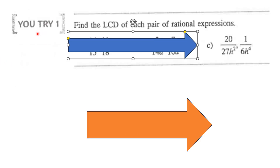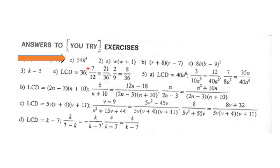Here is a U-try for you. Find the LCD of each pair of rational expressions: the first expression is 20 over 27h squared, and the second expression is 1 over 6h to the fourth. Please pause the video and try this yourself. Once you've finished, resume the video to see how you did. The answer you should have gotten is 54h to the fourth.